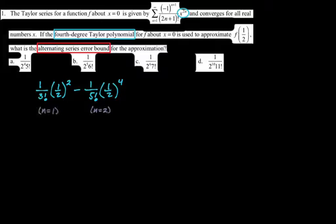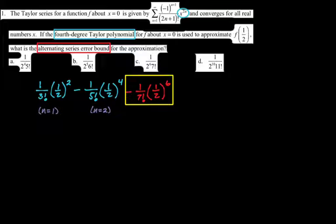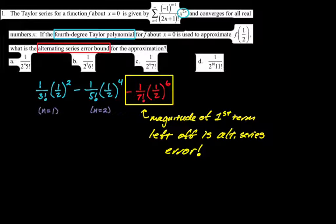We want the fourth degree Taylor polynomial. The series has x to the 2n, so plugging in n=1 gives x squared and n=2 gives x to the fourth. So plugging in n=1 and n=2 gives me the fourth degree; I'll simultaneously plug in 1/2. The alternating series error is the first term left off, so I plug in n=3, giving minus 1 over 7 factorial times (1/2) to the 6th. The magnitude of that term is the error bound, so the answer is C.